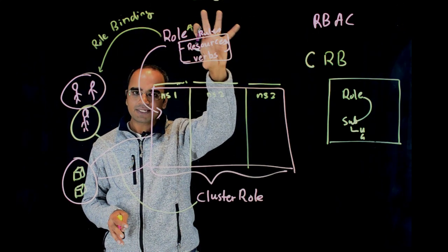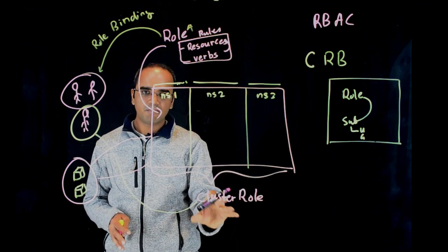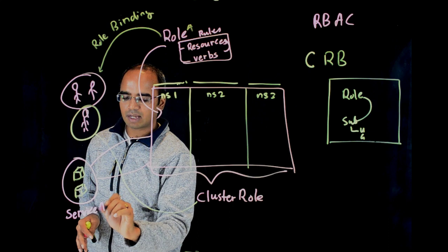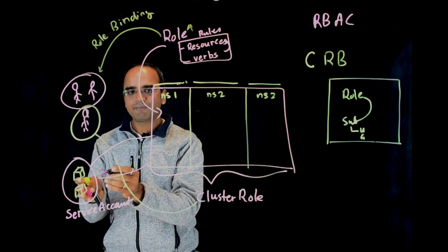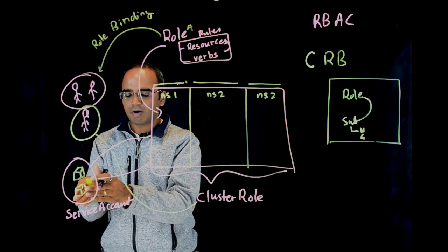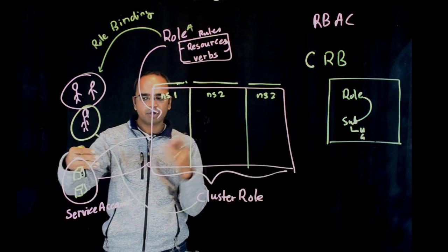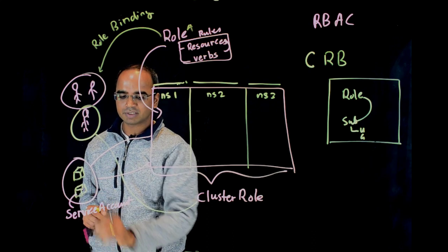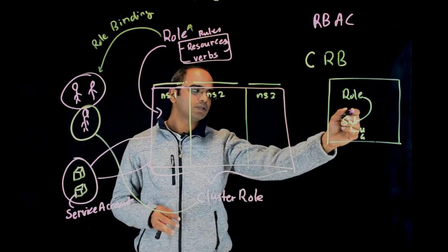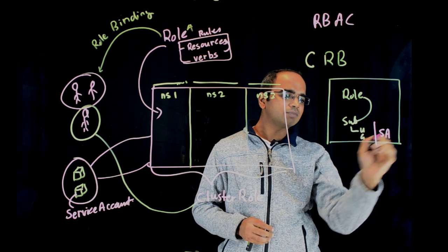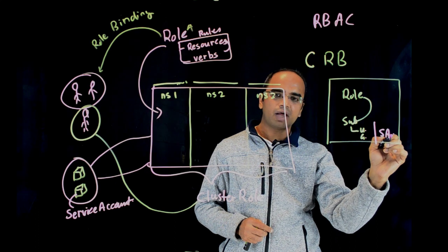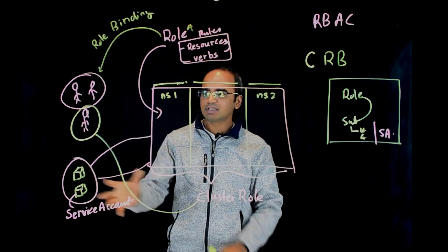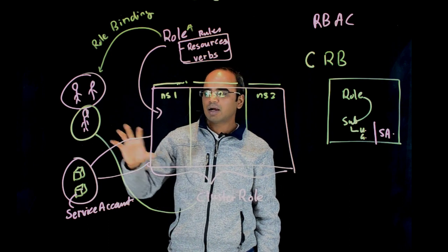When you want to provide access to an application, the access is provided using the same roles or cluster roles. But what you bind it to is a service account. You create a service account and map it to a pod — when you create a deployment or stateful set you attach a service account in the pod spec. That service account goes as the subject in the role or cluster role binding, just like a user or a group.